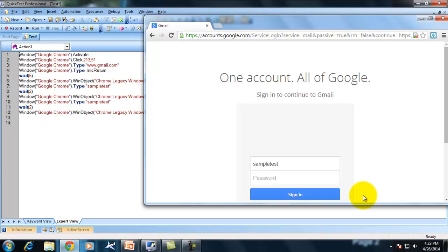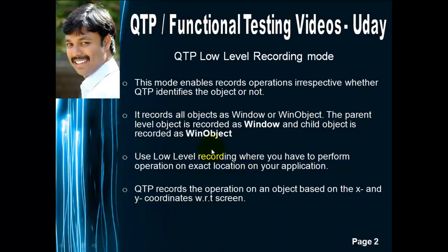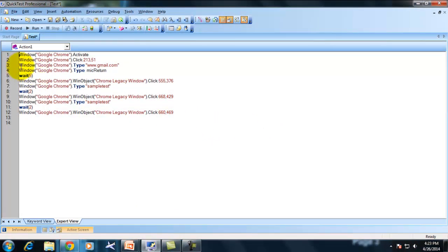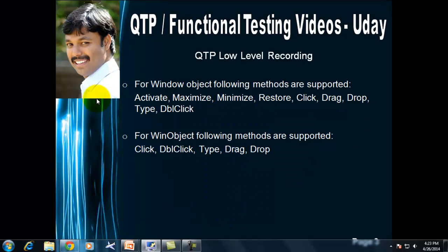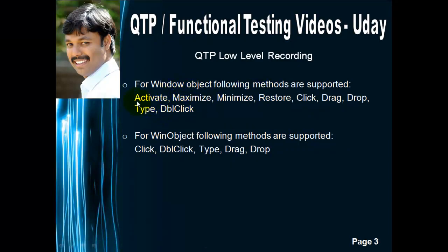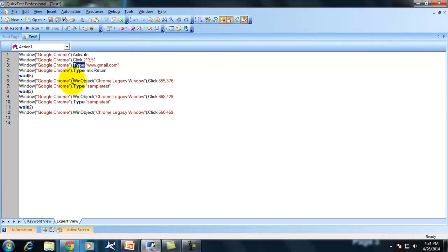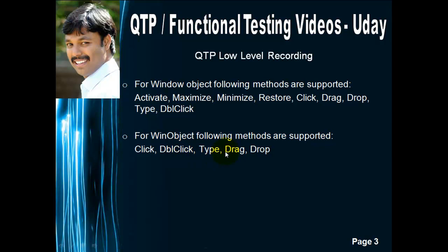Use low level recording mode only when necessary — when you need to perform an operation at exactly the same X and Y coordinates. The rest of the time, it's better to record your script using normal recording mode. Also, with window and win objects, only a very limited set of methods are available. For Window objects: activate, maximize, minimize, restore, click, drag and drop, type, and double click. For Win objects: click, double click, and type are the only methods available.